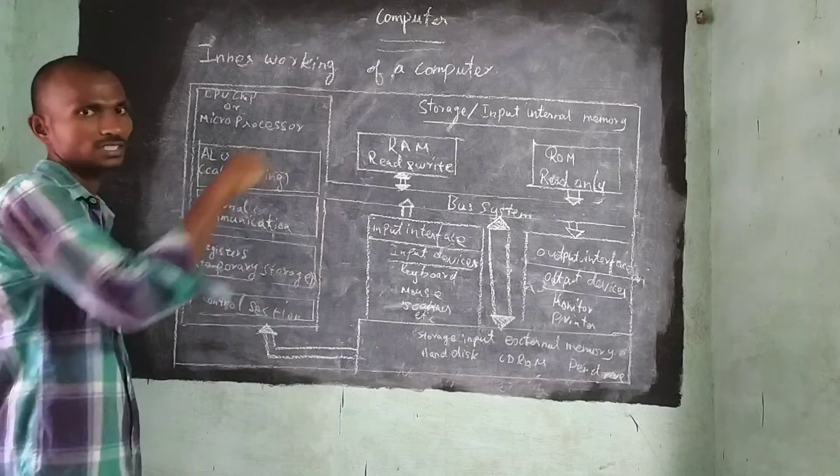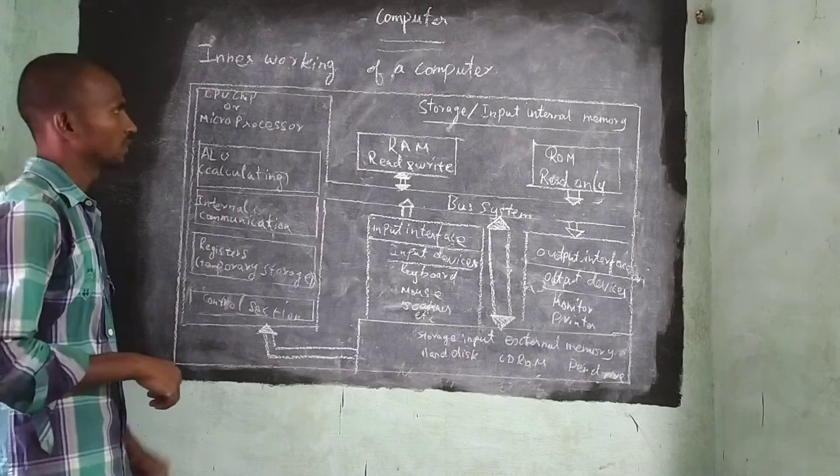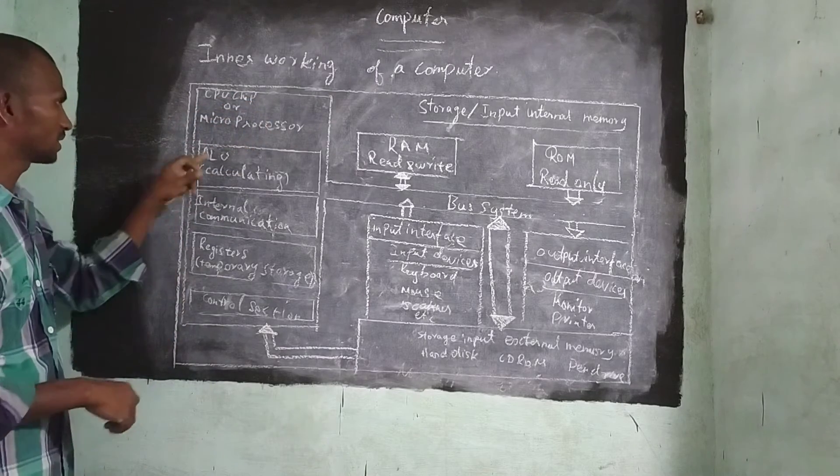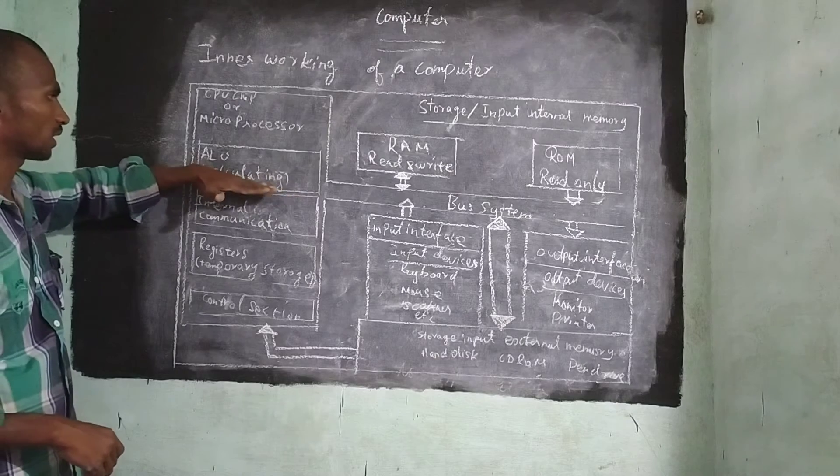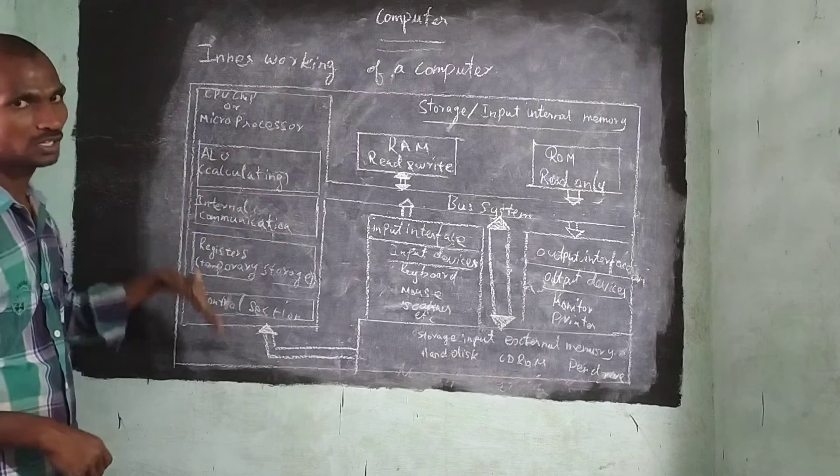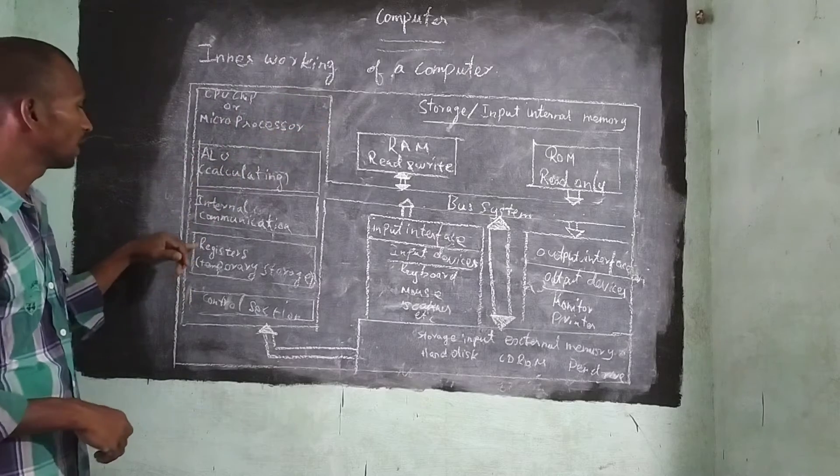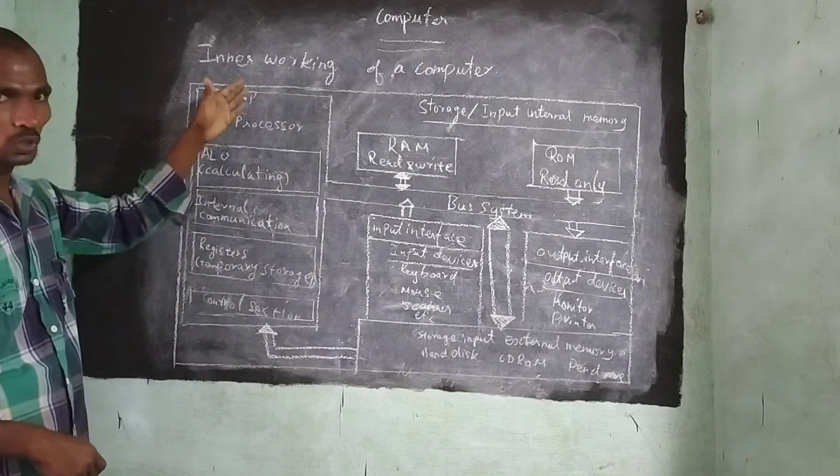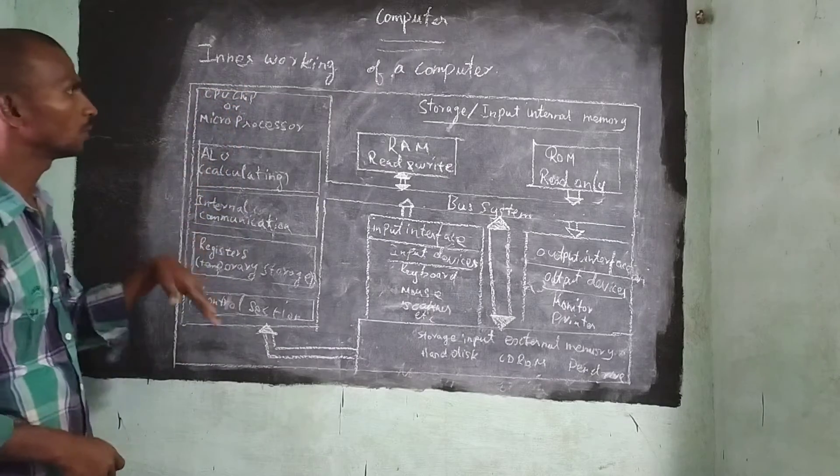It is the overall structure of the computer. First thing is CPU or CPU chip or microprocessor. Next, ALU is used for calculating. Next, Internal communication. It will communicate with each and every parts of the computer. Next, Register. It is a temporary storage. Next, Control section. This is the process occurring inside the CPU.